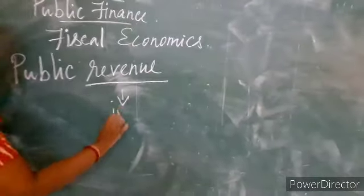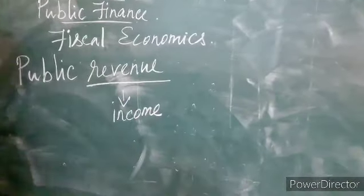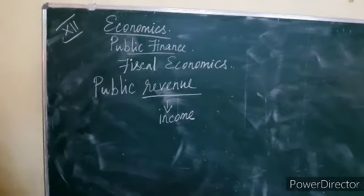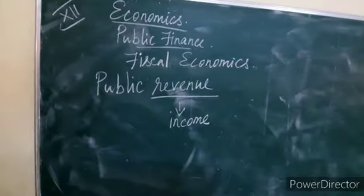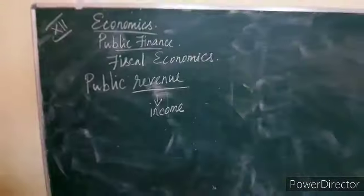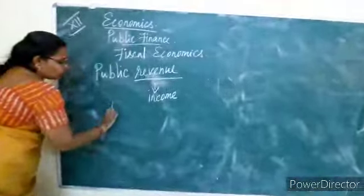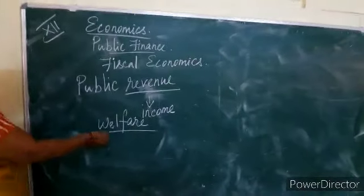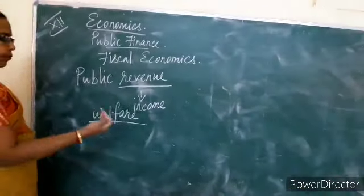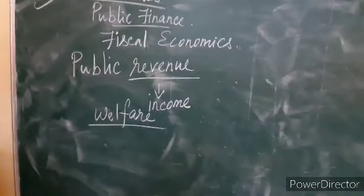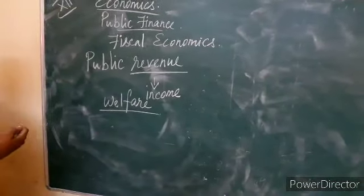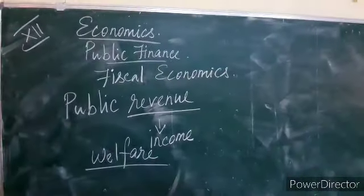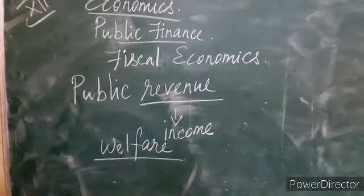Revenue means income. We are going to study how the government gets income from different sources. It occupies an important place, as the government has to perform several duties. Our state is a welfare state, and the prime motive of public authorities is welfare. So the government has to spend more money for public welfare, and to spend money it needs money — it has to get its income from different sources. The amount of public revenue depends upon the expenditure the government is going to spend.